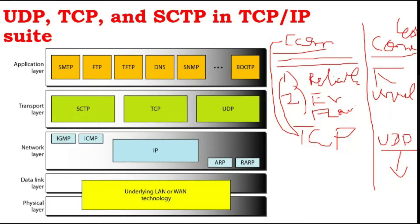UDP is the simplest protocol. If you need to transfer data very fast and delay is more important than reliability — if the data does not need guaranteed delivery — then UDP is useful. TCP is a more complicated process; even though it is reliable, there is more delay involved.